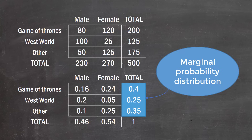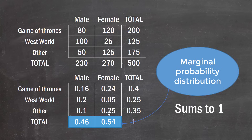That column is called the marginal probability distribution. Just like the joint probability distribution, this one also sums to one. Importantly, this marginal probability distribution completely ignores gender — it's as if that variable doesn't exist. There's also another marginal probability distribution for gender, which ignores show preference. It sums to one as well: 46% male and 54% female.